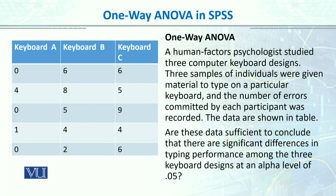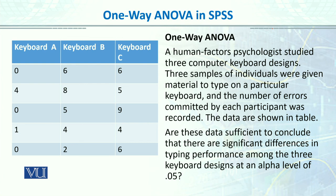The dependent variable is typing performance, measured by a continuous score — specifically, how many errors were made. The independent variable is the type of keyboard, with three treatment levels: A, B, and C.